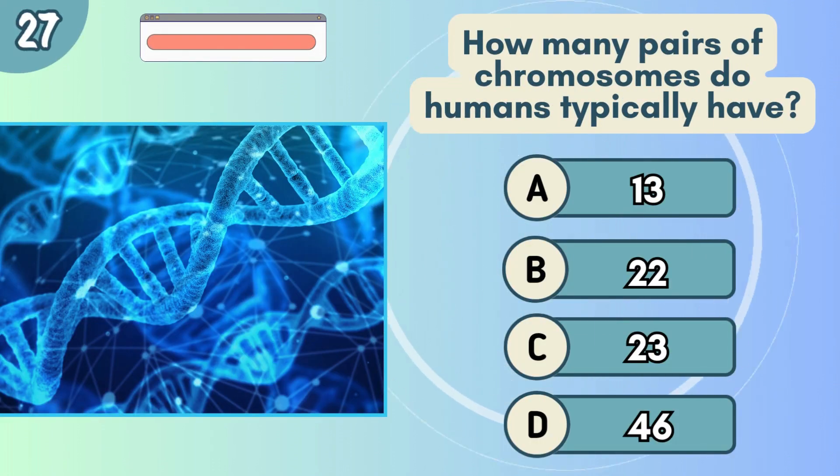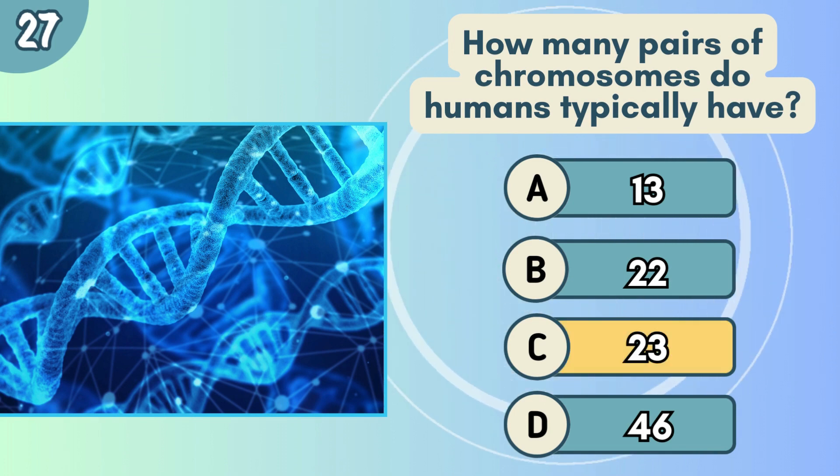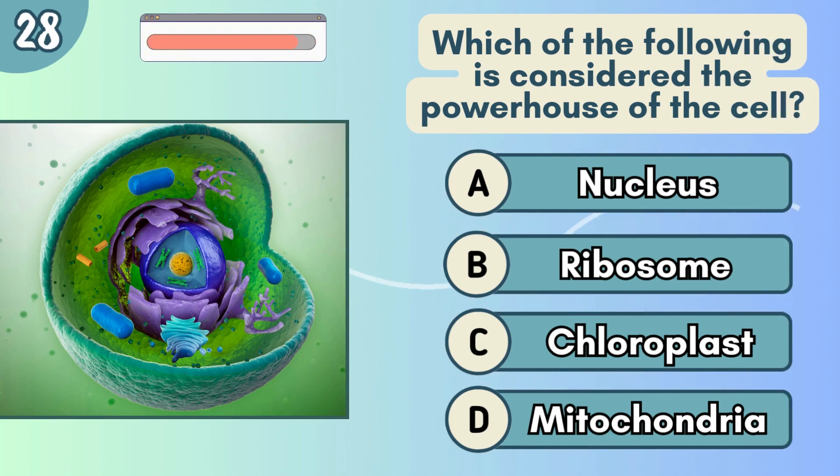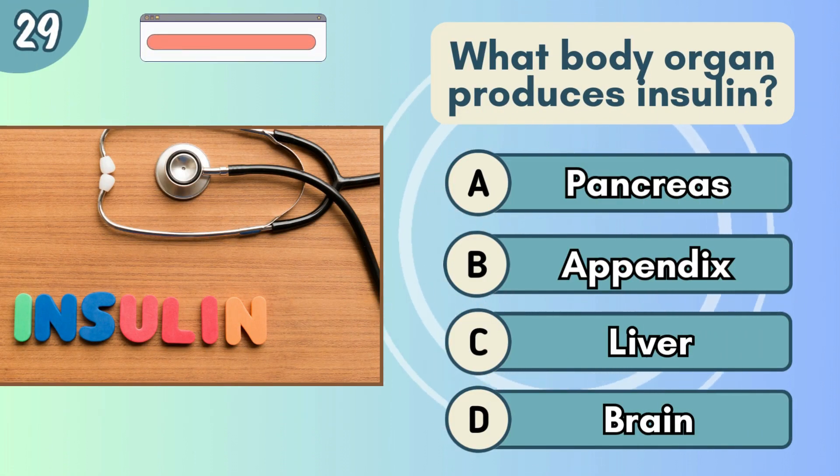How many pairs of chromosomes do humans typically have? Which of the following is considered the powerhouse of the cell? What body organ produces insulin?